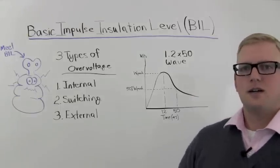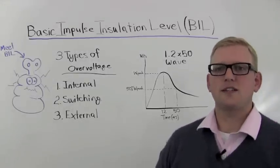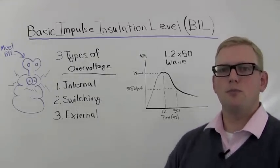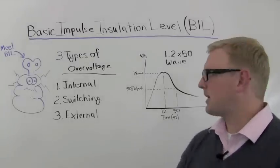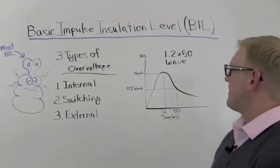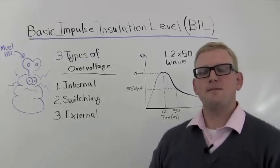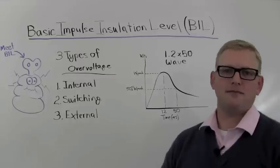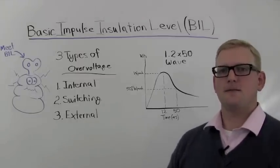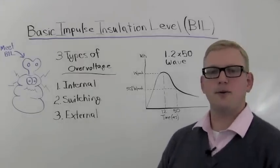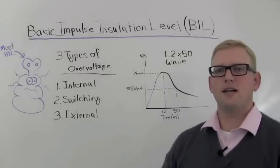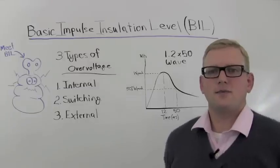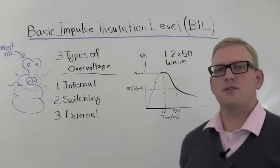So the 1.2 means: 1.2 microseconds past the event — say a lightning strike occurs — 1.2 microseconds later the wave peaks. And 50 microseconds after the event, after the lightning strike, the wave will be at about 50% of its peak. This is the standard waveform used to classify BIL and to allow engineers to select a piece of equipment that can withstand a certain level of voltage surge.